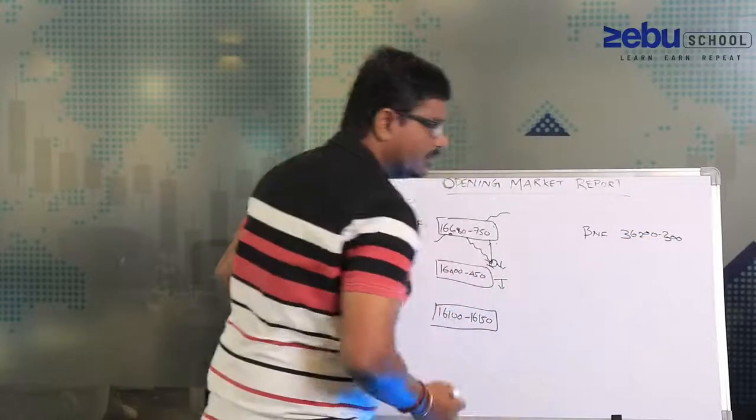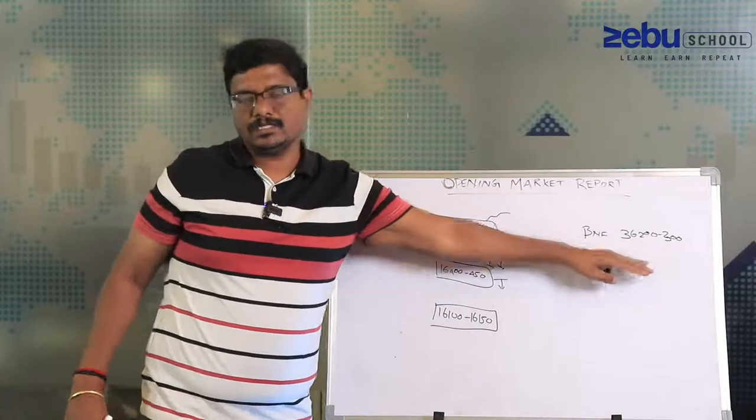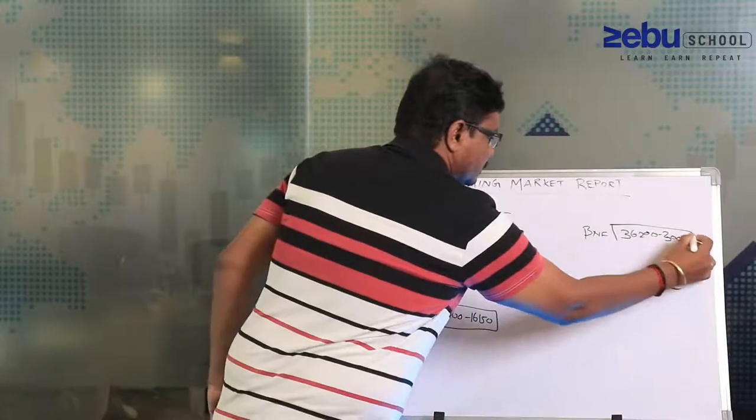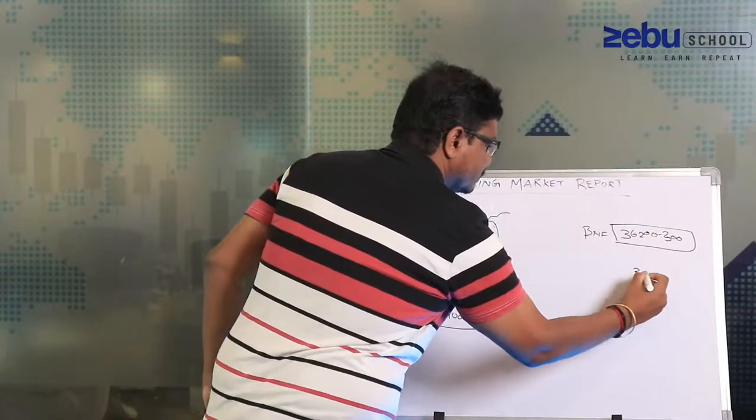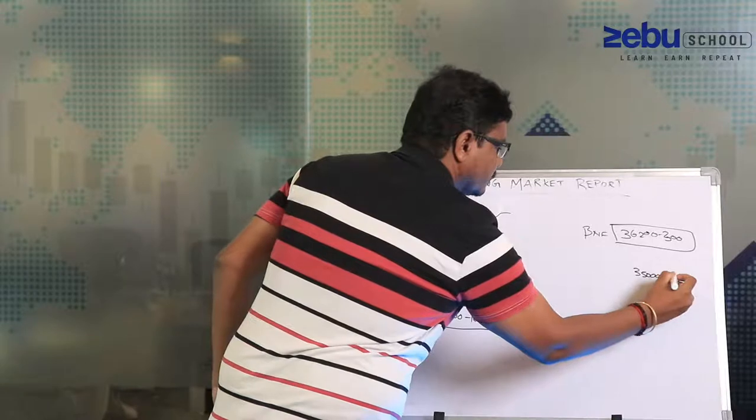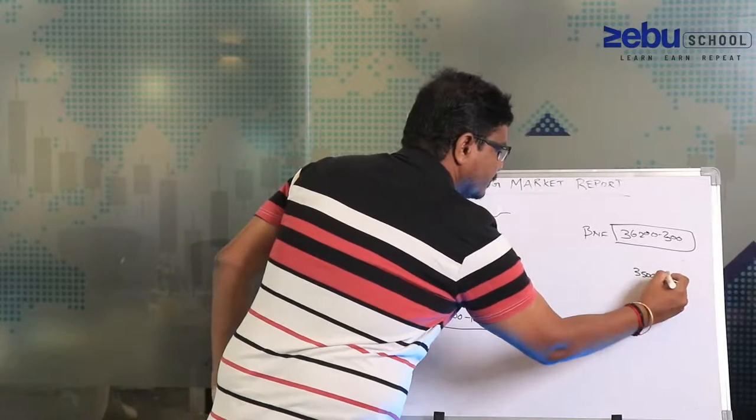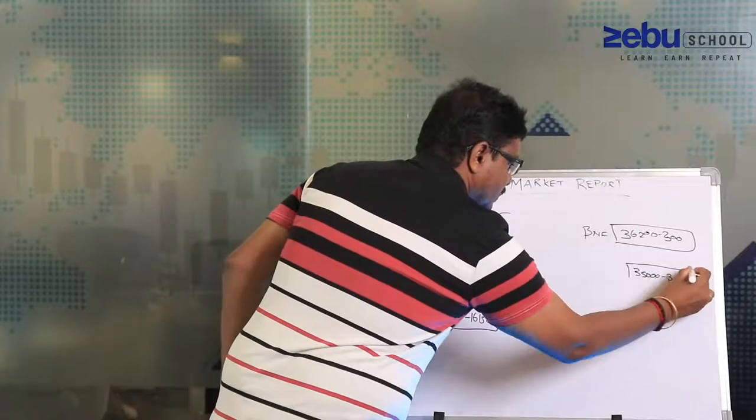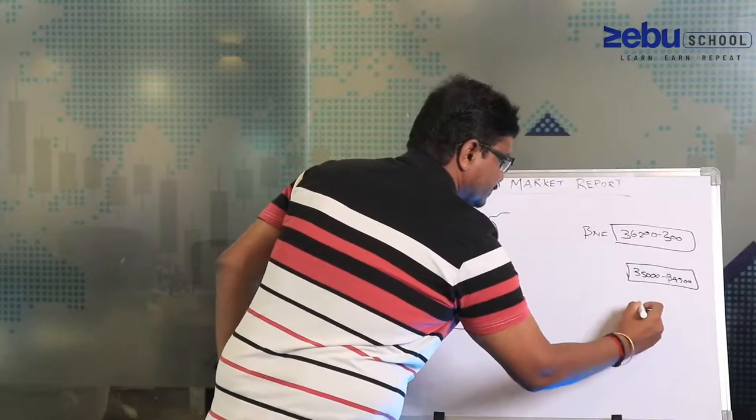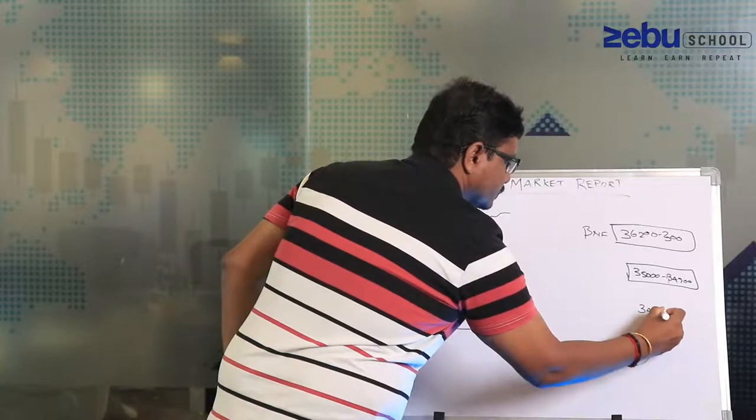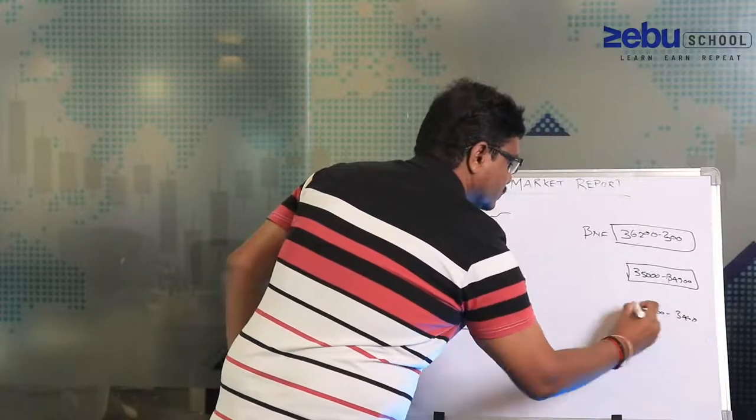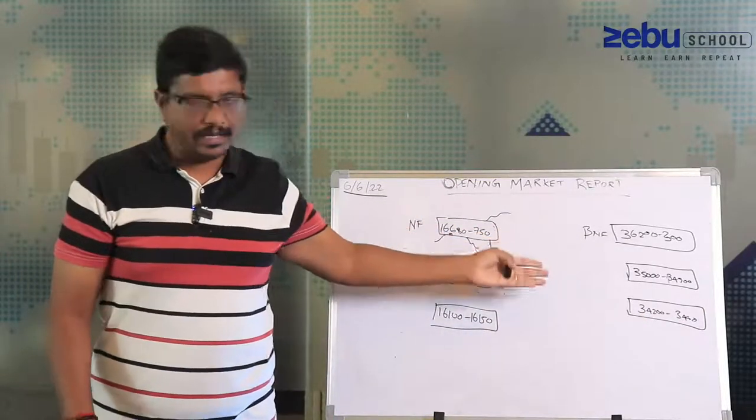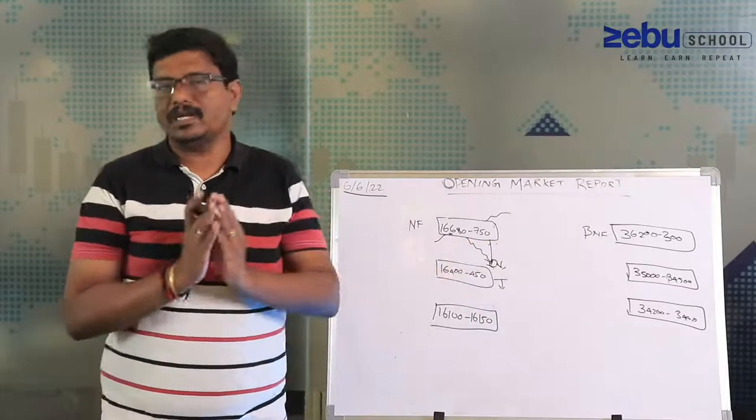This is my structure for Nifty. Moreover for Bank Nifty also I said this is the key level. Remember that on that day I ran the chart on the last week. This is the key level I was mentioning. Somewhere around 34,900 is the key level. The next level is this. So these are all the key important levels I remember when looking at the market as a structure.